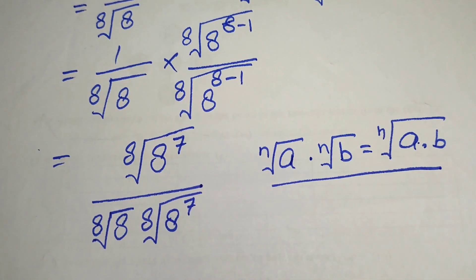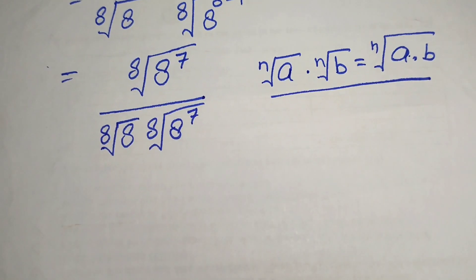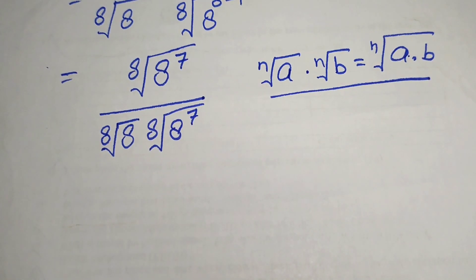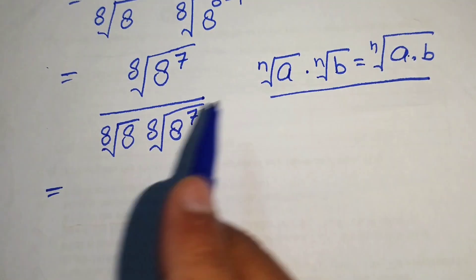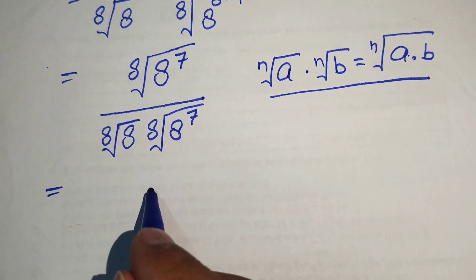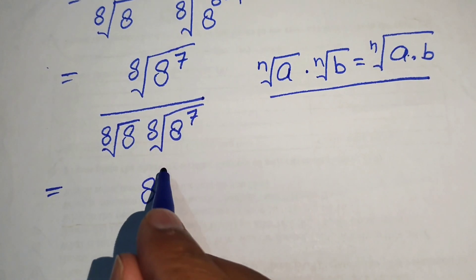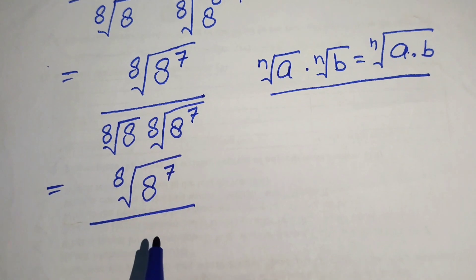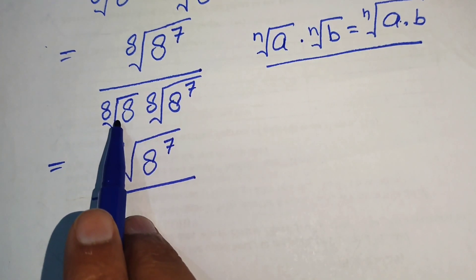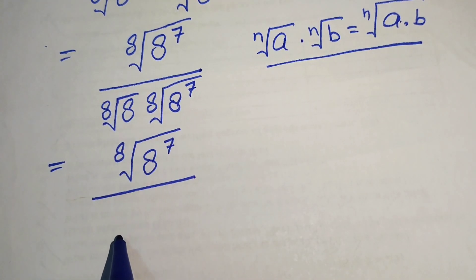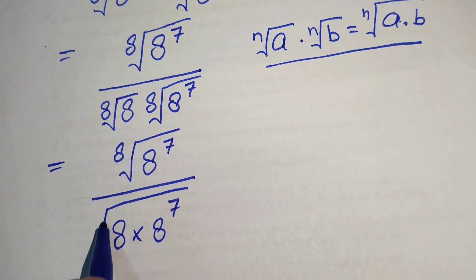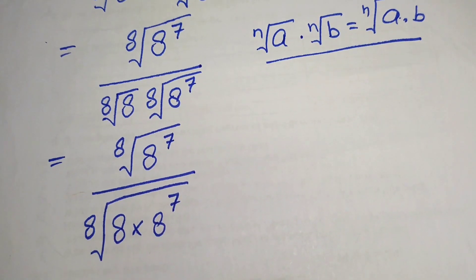We apply this radical product formula to the denominator. So the denominator becomes the 8th root of 8 to the power of 7 divided by the 8th root of 8 multiplied by 8 to the power of 7, combining the two 8th roots in the denominator into one.